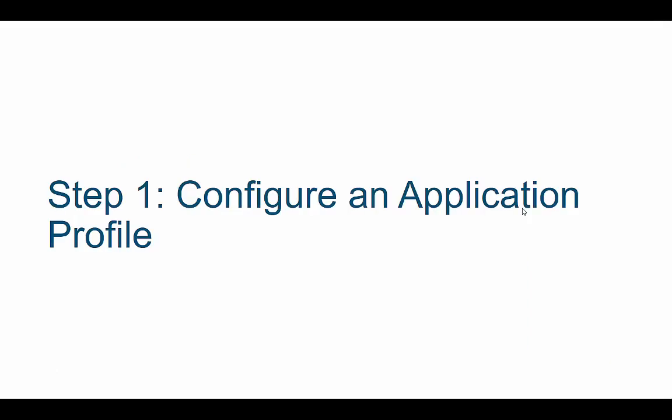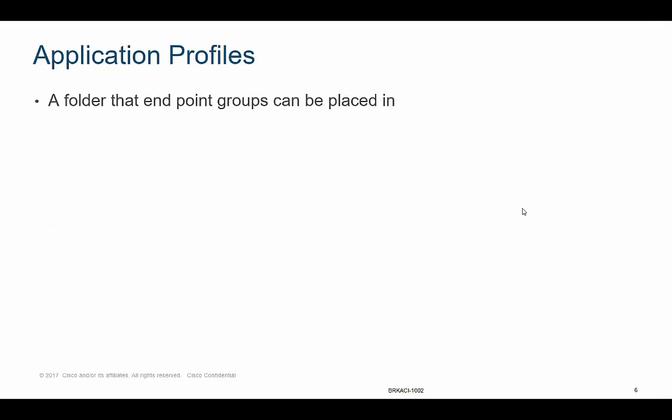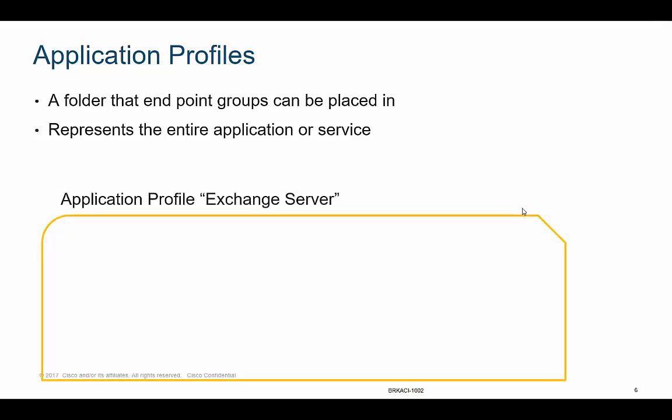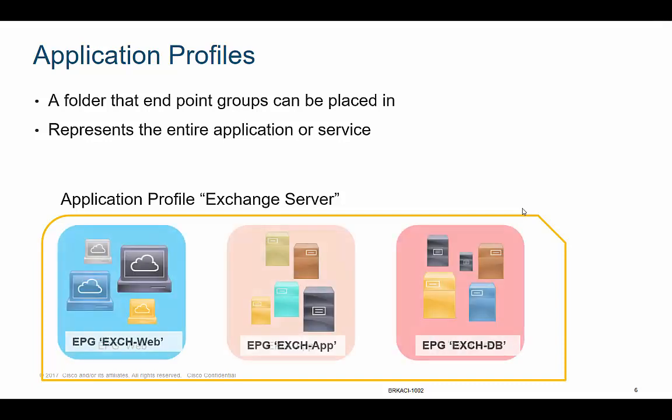The first step is to create something called an application profile. It's pretty simple — it's really like a folder that endpoint groups can be placed in, and it represents the entire application or service. For example, you could create an application profile called Exchange Server, and then in a later step, create multiple endpoint groups within that application profile.